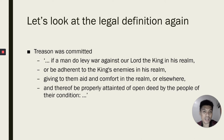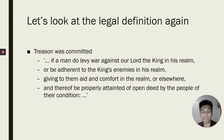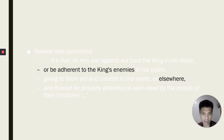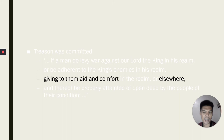Let us look at the legal definition again and what the accused wanted to say. Treason was committed if a man do levy war against our lord the king in his realm. The second act is to be adherent to the king's enemies in his realm, and this is the act for which the accused was charged. And lastly, giving to them aid and comfort in the realm or elsewhere. So he was accused, charged, and convicted of being adherent to the king's enemies elsewhere — Germany. The crime was allegedly committed in Germany, and therefore is covered by the Treason Act. But the accused says the word 'elsewhere' does not refer to 'adherent to the king's enemies,' but rather to 'giving aid and comfort to the enemies,' which was not the crime charged.